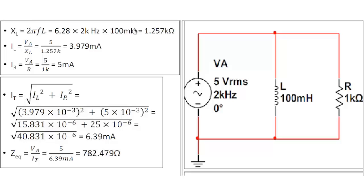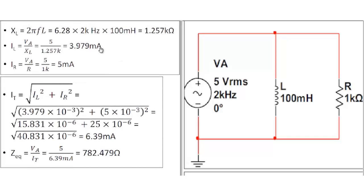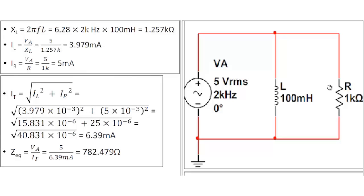Why do you need to do that? You divide that ohmic value into the 5 volts RMS and you get 3.979 milliamps — and there should be RMS here. The book didn't label it, but if it were peak voltage it would be 3.979 milliamps peak, and if RMS, 3.979 milliamps RMS. You do the same thing for the resistor and get 5 milliamps RMS.